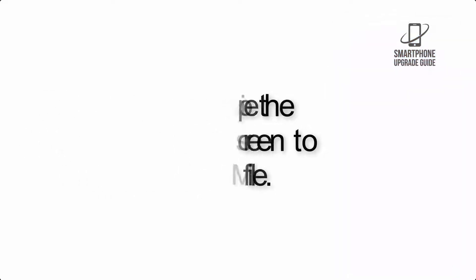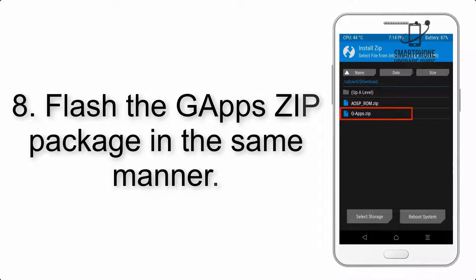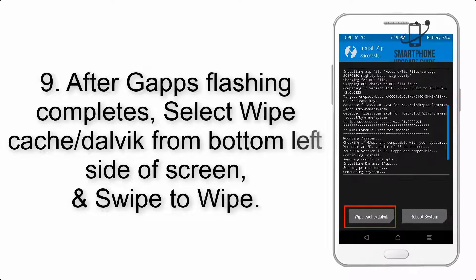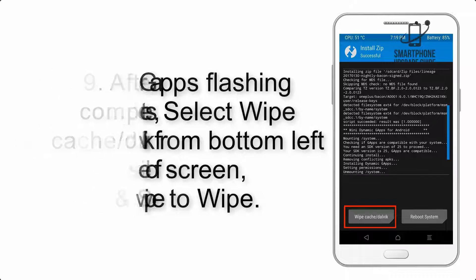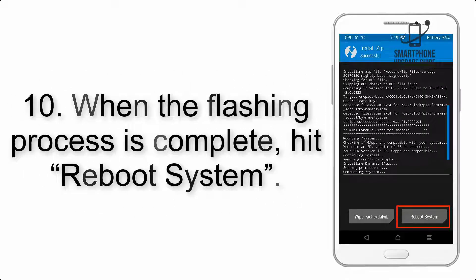Step 8: Flash the GApps zip package in the same manner. Step 9: After GApps flashing completes, select Wipe Cache and Dalvik from the bottom left side of the screen and swipe to wipe. Step 10: When the flashing process is complete.